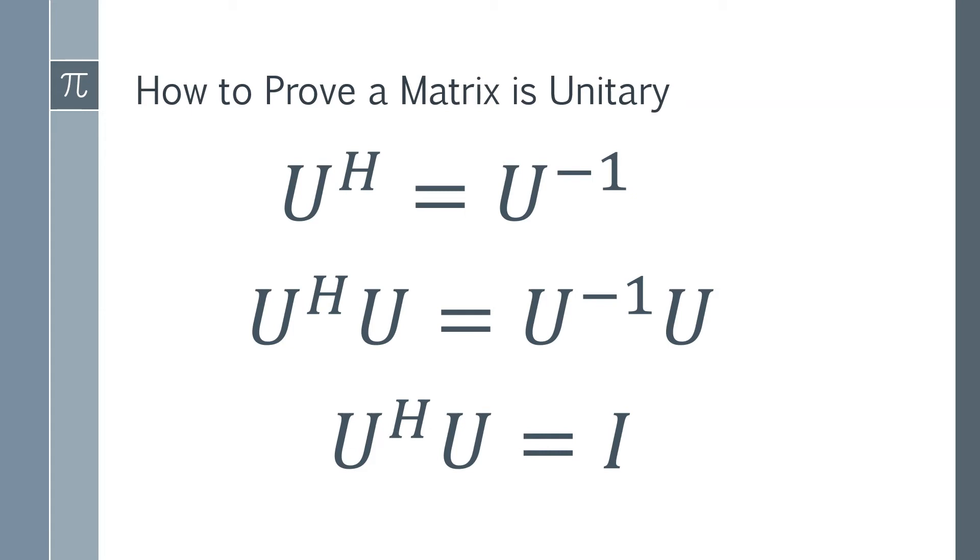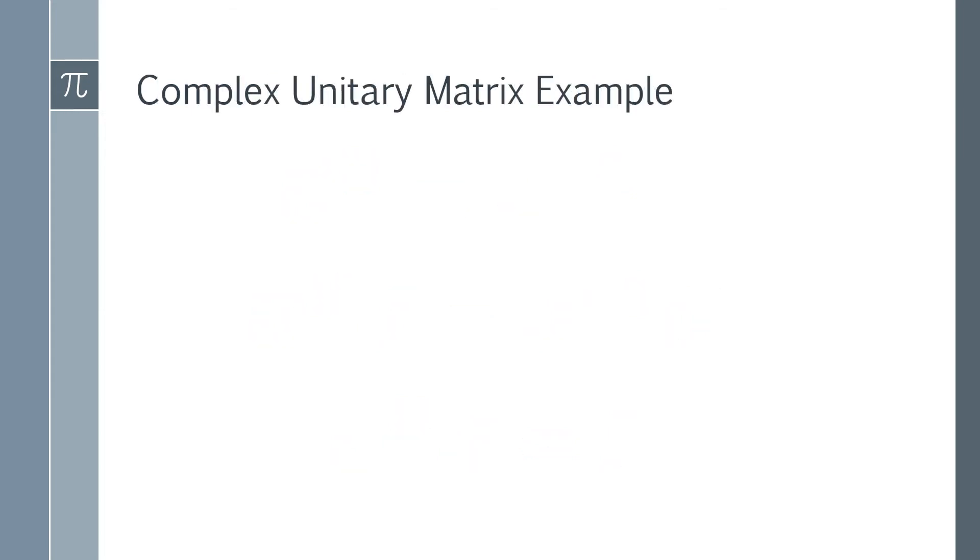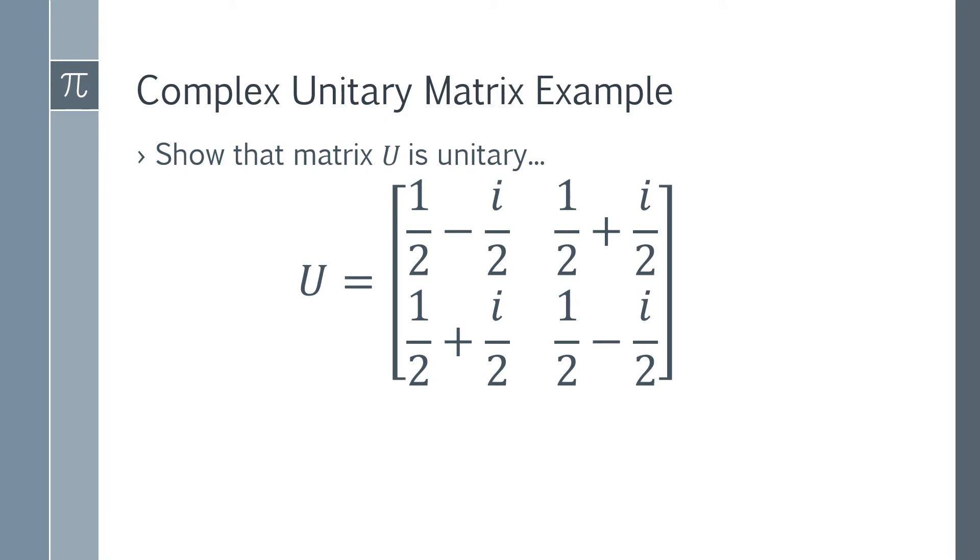So let's look at an example of how you can do this with an actual matrix. So obviously because it's a unitary matrix, it's going to be a complex matrix. So we want to show that matrix U is unitary. So this is going to be our matrix. And if you look at that, you can immediately see that there's a half appearing everywhere.